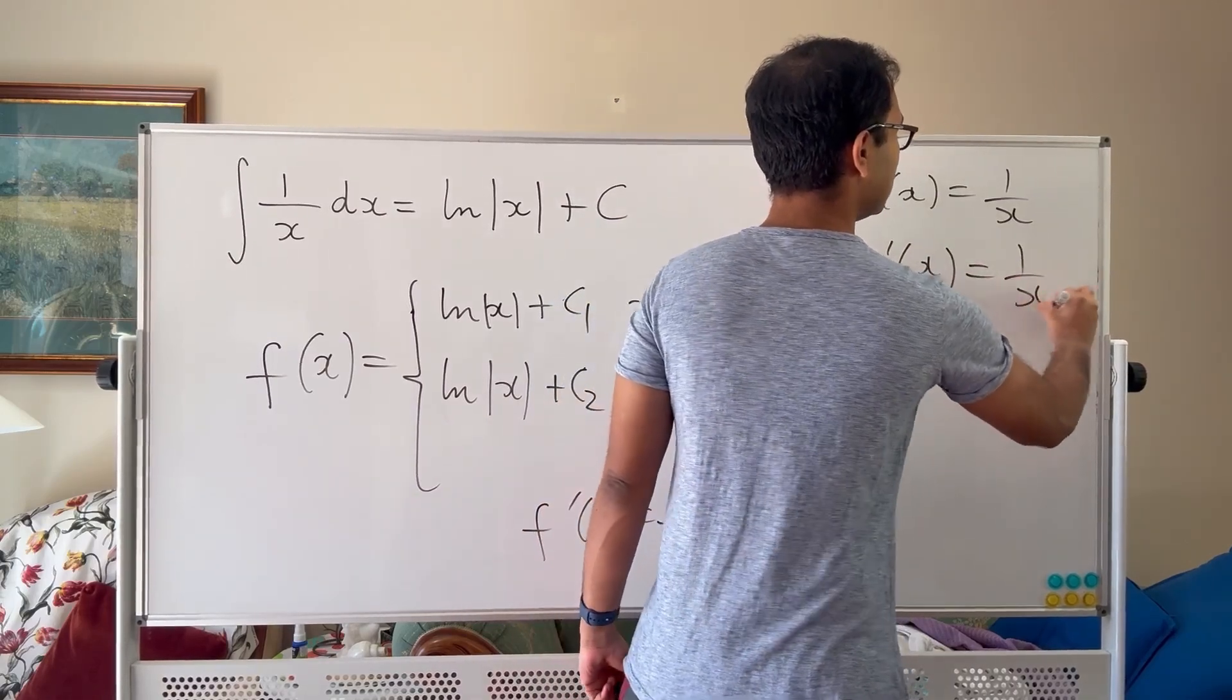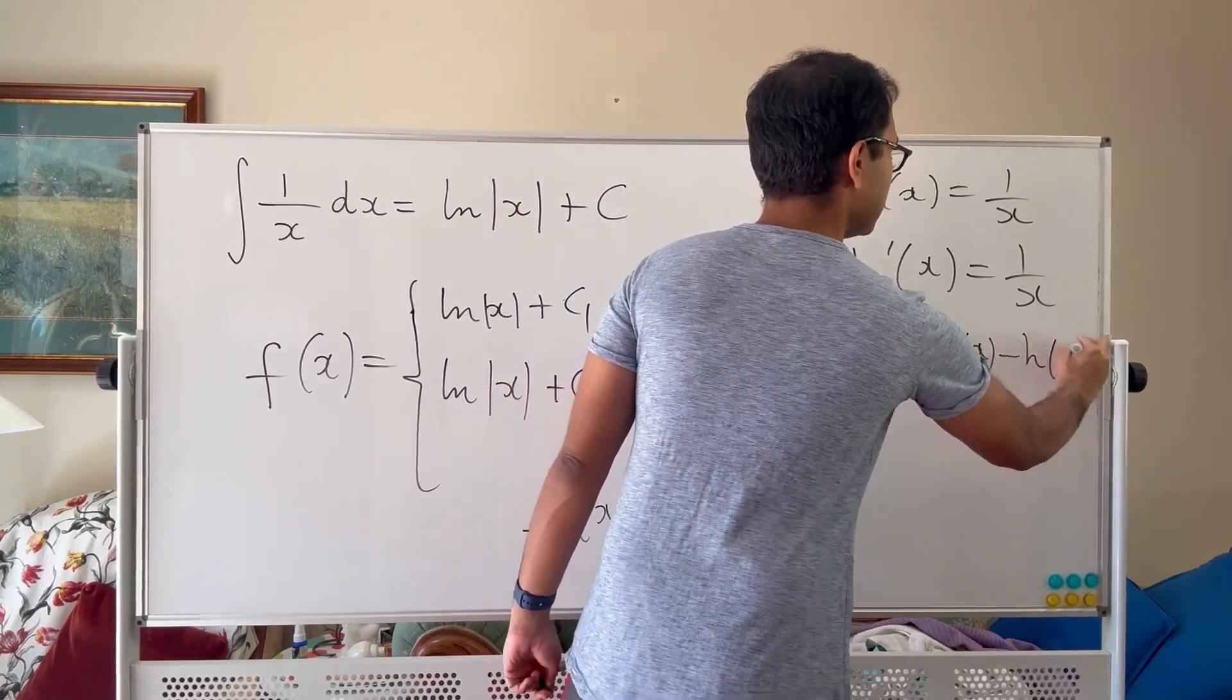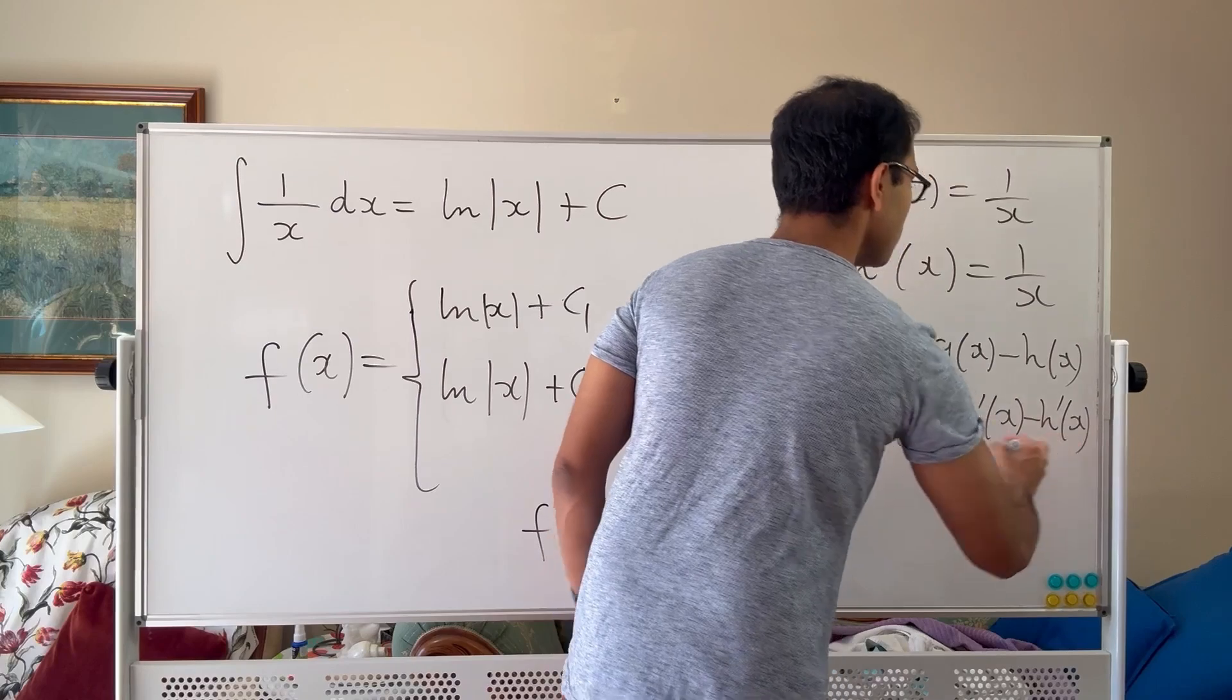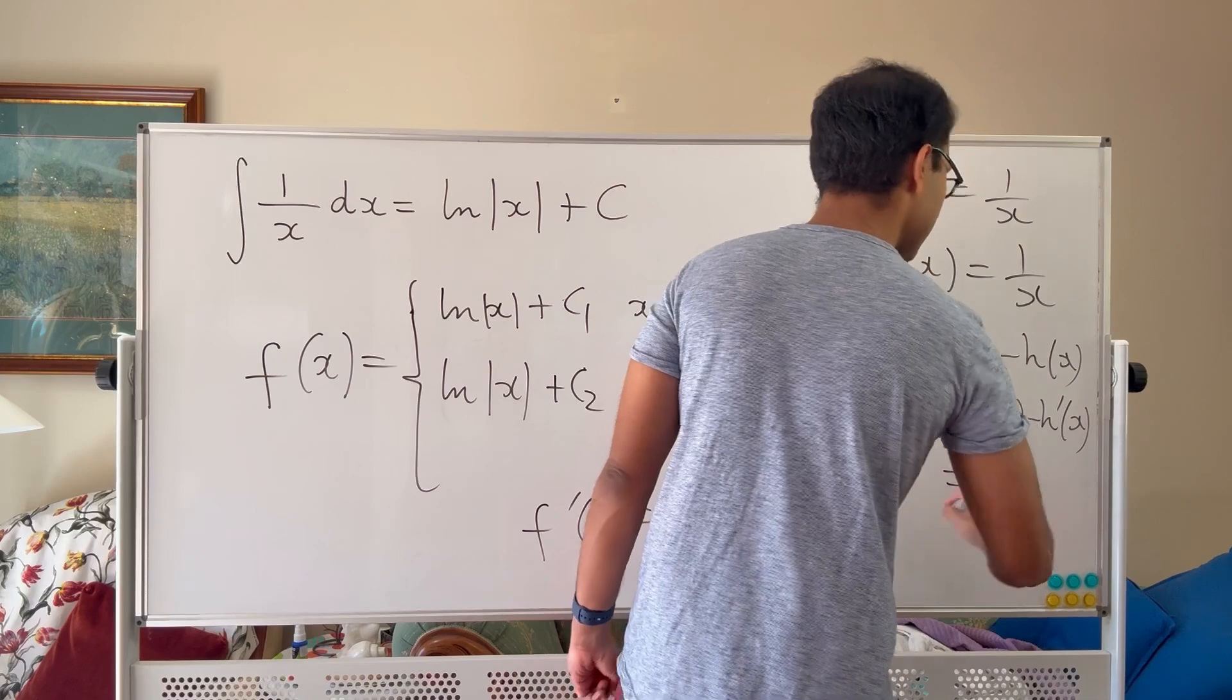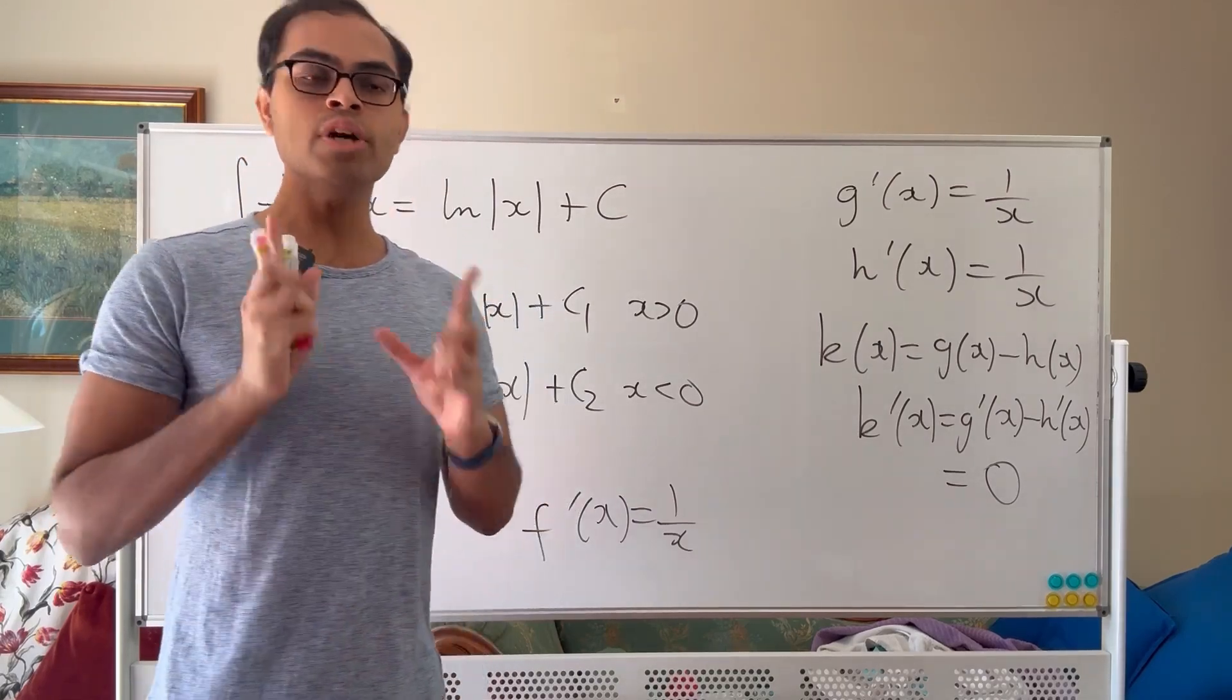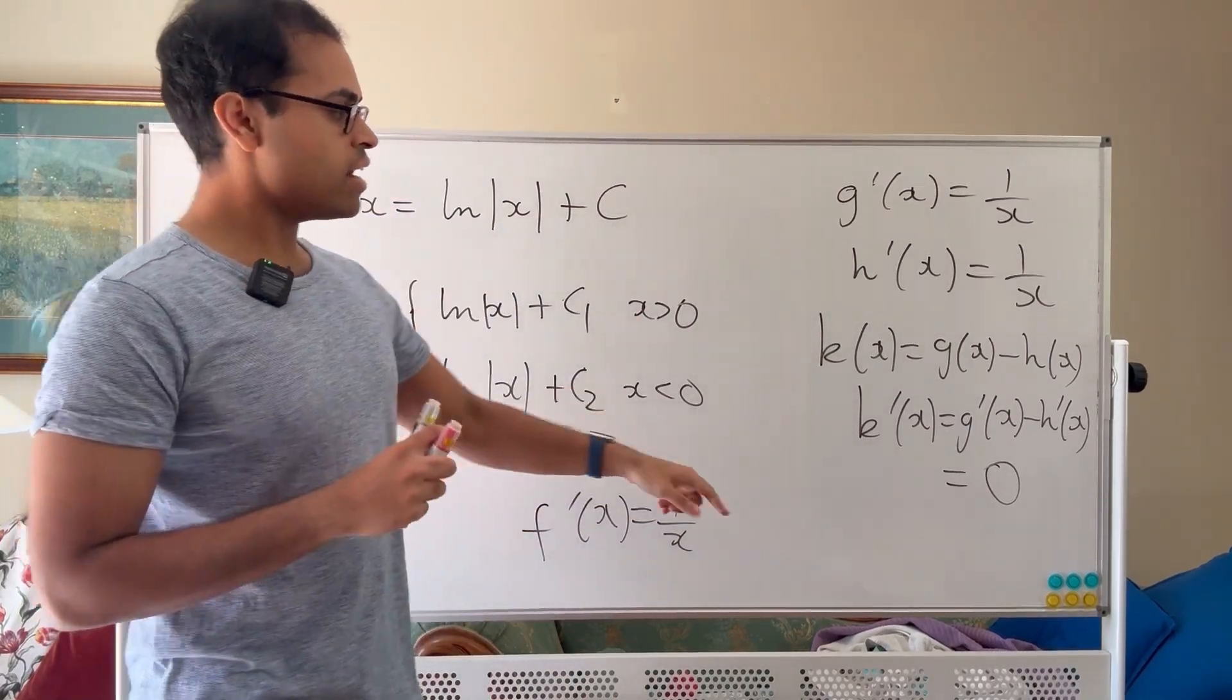In that case if I define a function k of x is equal to g of x minus h of x, then k prime of x is going to equal g prime of x minus h prime of x, which because both of those are equal to 1 over x, they're both anti-derivatives of the same function. That's going to imply k prime of x is 0. And now we have a function k of x whose derivative is 0, and then we conclude that's a constant, which would imply that the difference between g and h is a constant, which is why we put the plus constant in integration.